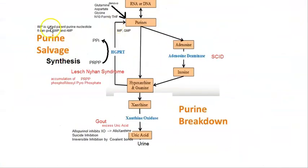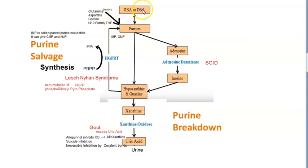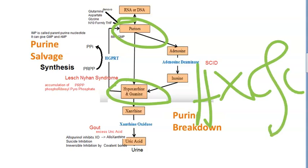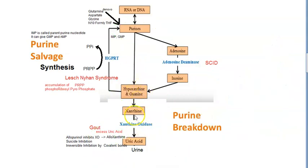Let's look at purine metabolism. There is purine synthesis and purine breakdown. Purines are broken down into hypoxanthine and guanine. Hypoxanthine and guanine are then converted into xanthine, and xanthine is converted into uric acid. If there is excess breakdown, you will have a lot of xanthine and then a lot of uric acid accumulating in the body.